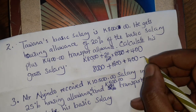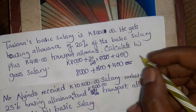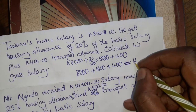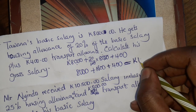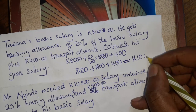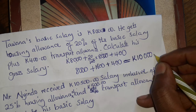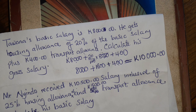When we add all these to get his gross salary: 8,000 plus 1,600 plus 400 — the allowances together give 2,000 — so altogether we are going to have 10,000. That is the gross salary amount.